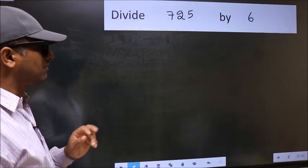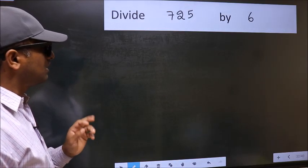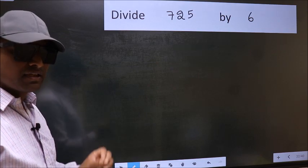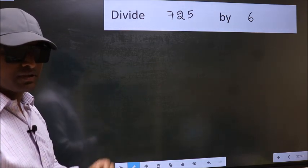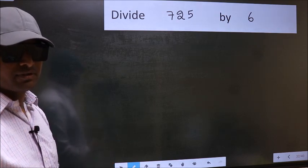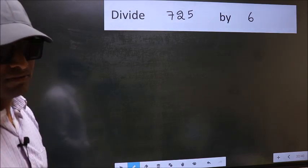Divide 725 by 6. While doing this division, many do this mistake. What is the mistake that they do? I will let you know. But before that, we should frame it in this way.